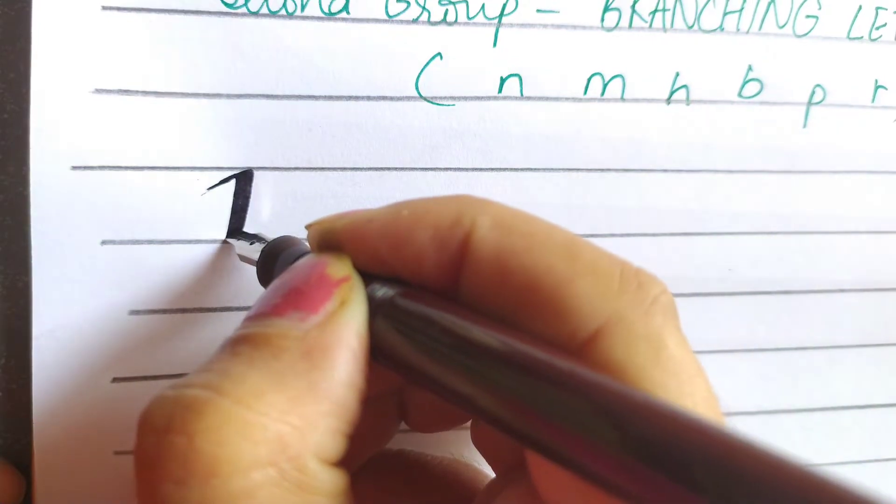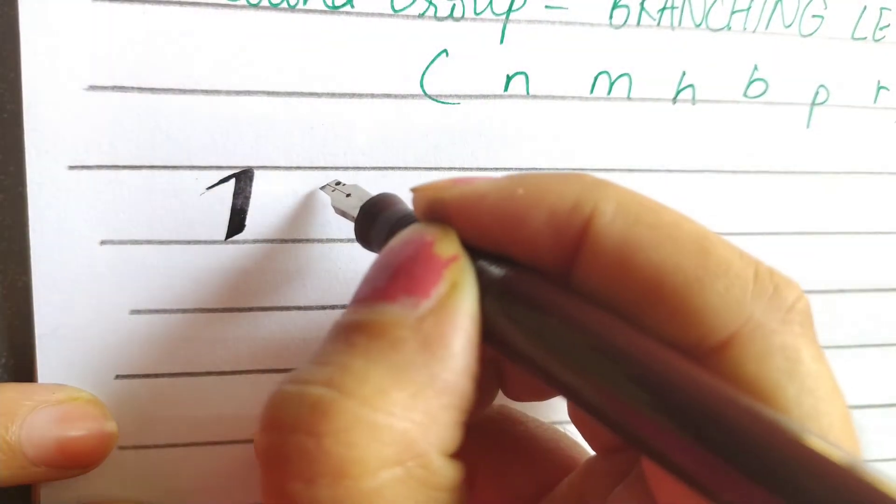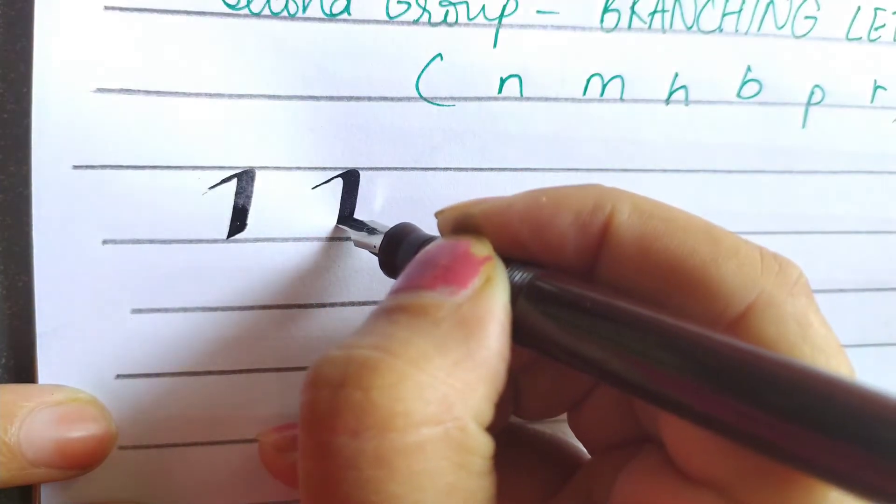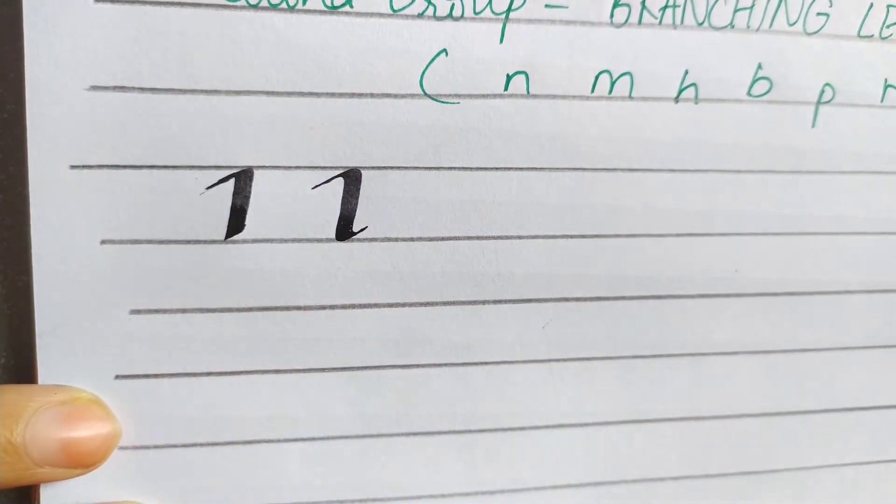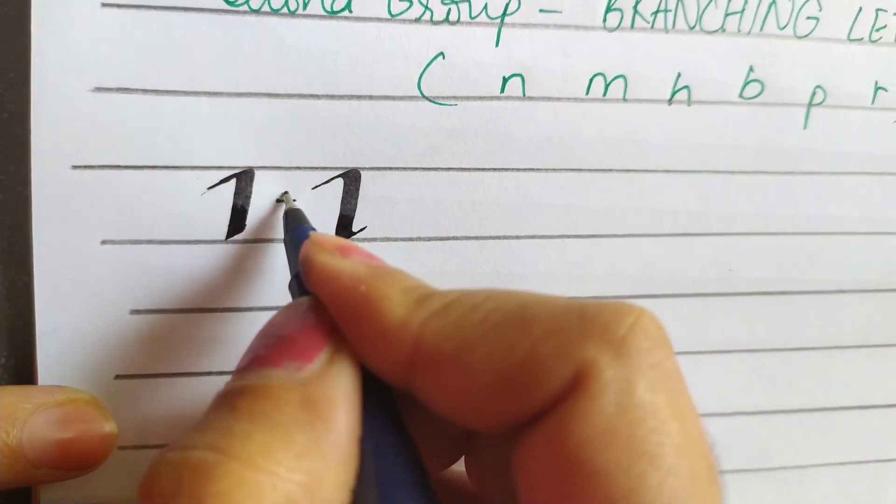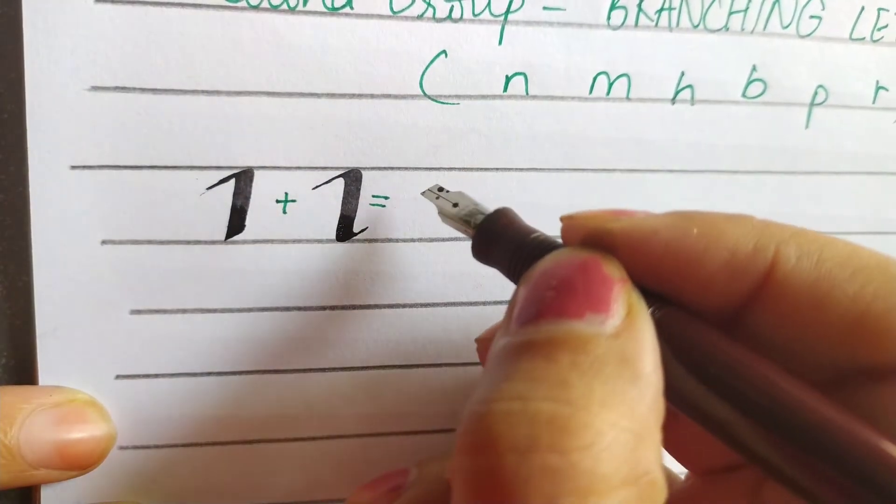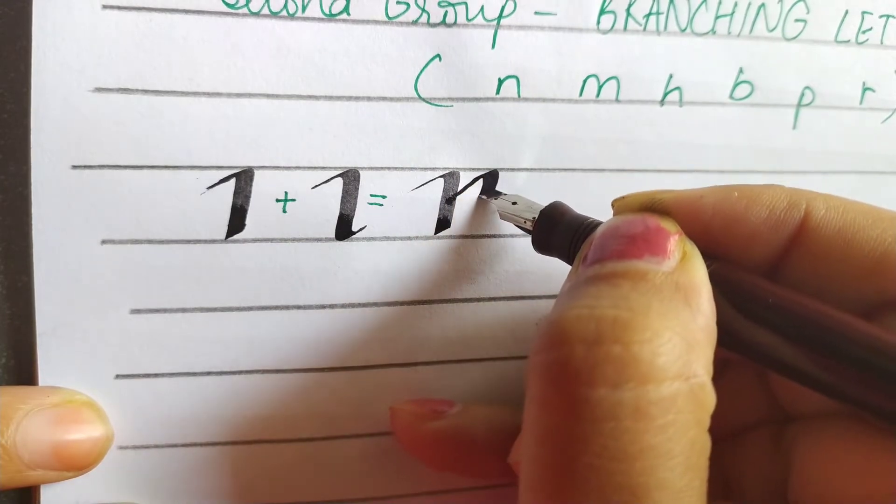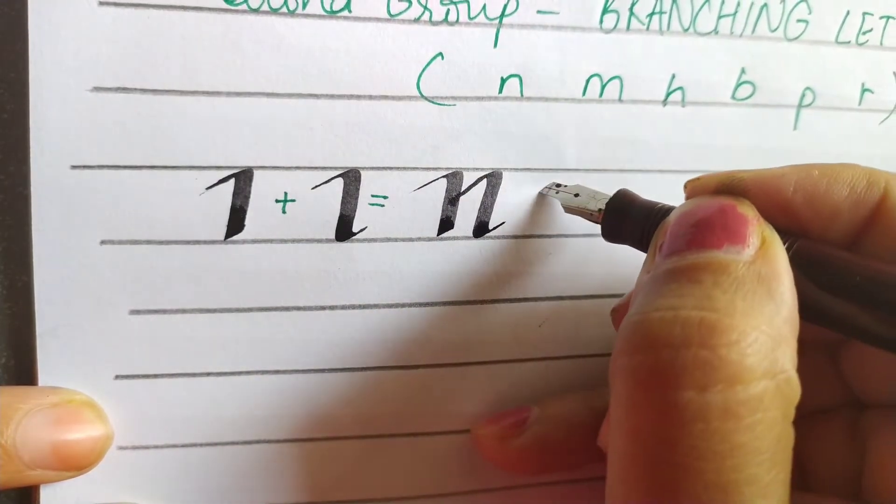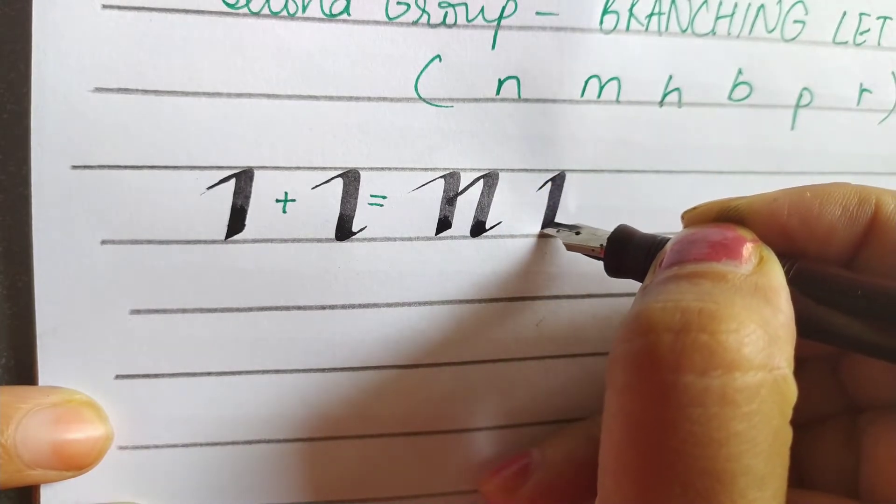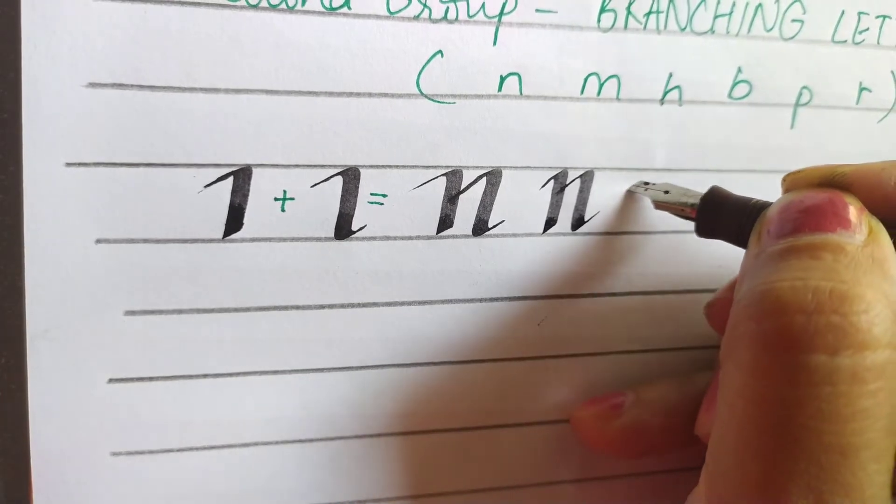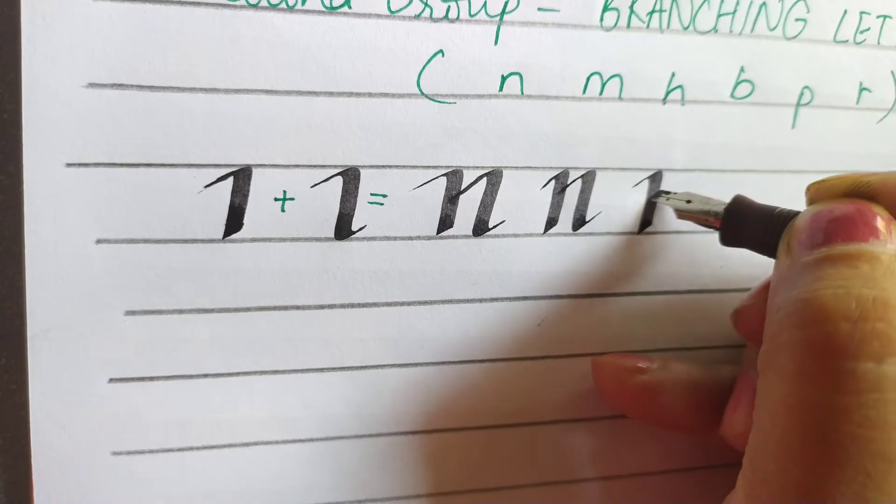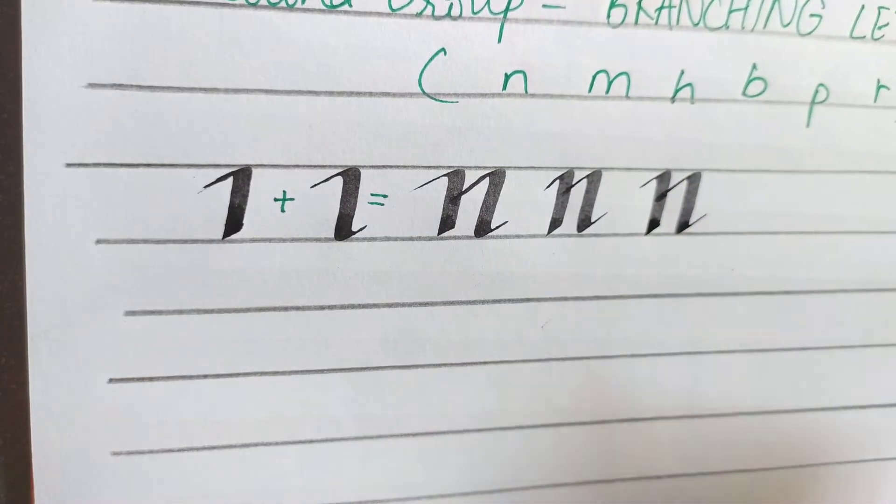To make alphabet N we will make first a downstroke and then we will add this, so it will become like this. This is alphabet N. We have to make our strokes look clear and precise.